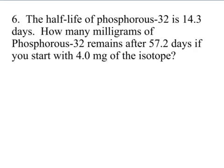To begin, we need to determine the number of half-lives that have passed. And so we know the time elapsed is 57.2 days. And I know that the half-life of this particular radioisotope is 14.3 days. If you divide the time elapsed by the half-life, you will determine that four half-lives have elapsed.